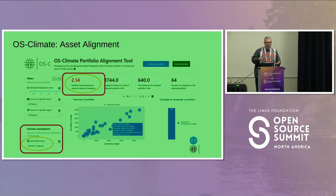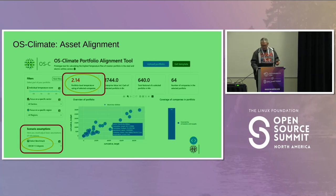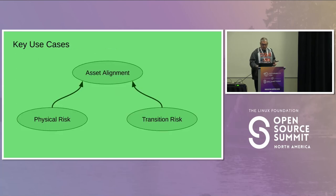This is an example of using tooling to assess whether the investments we're making as individuals, groups, or organizations are actually helping or hurting our ability to meet different kinds of climate targets.